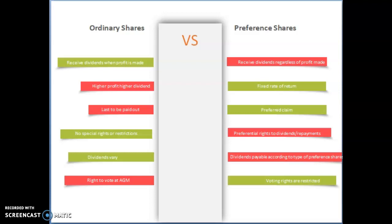Ordinary shares have no special rights restrictions, so sometimes they're referred to as standard shares. Whereas with preference shares, these shares enjoy preferential rights to dividends or repayment over ordinary shares.